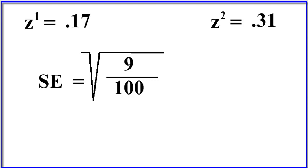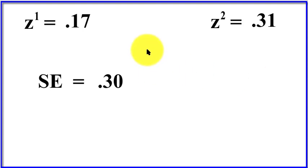And I get 9 over 100. The square root of 0.09. Use your calculator, and it comes out to be 0.3. So that's our standard error.